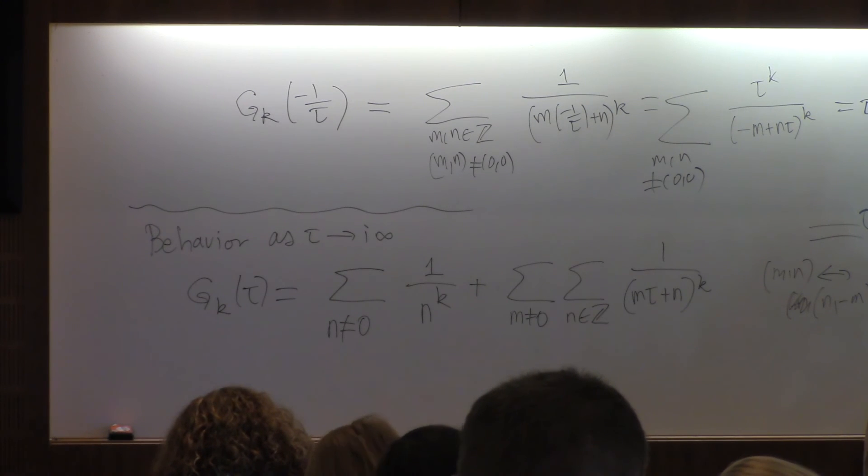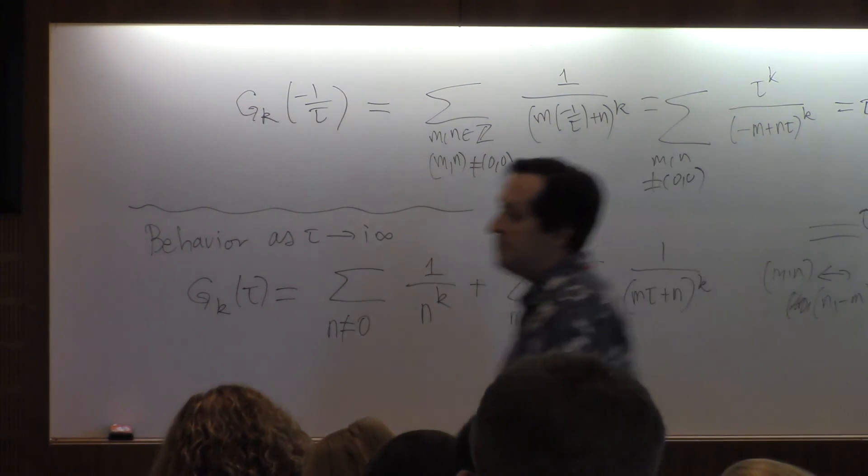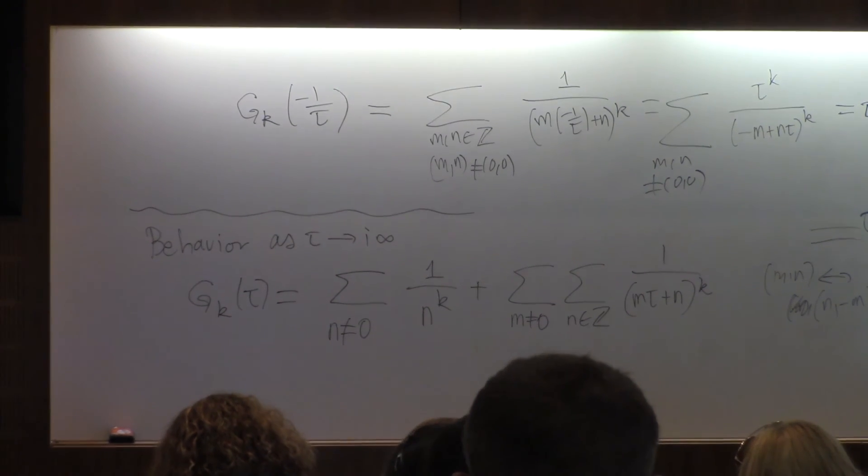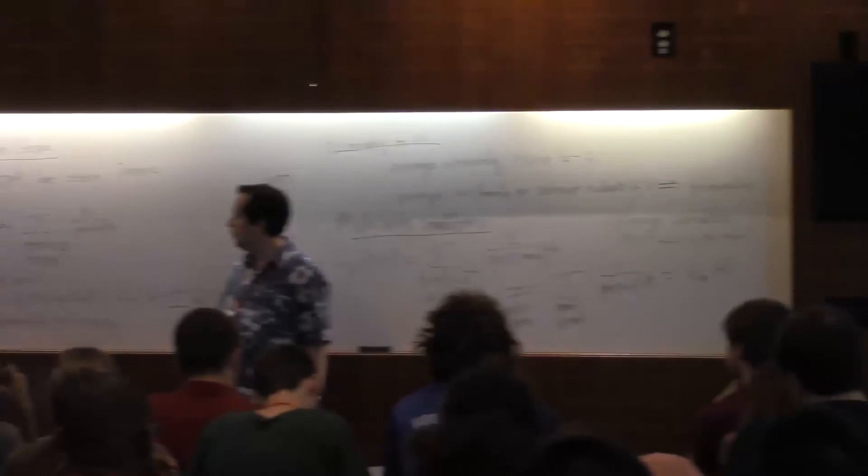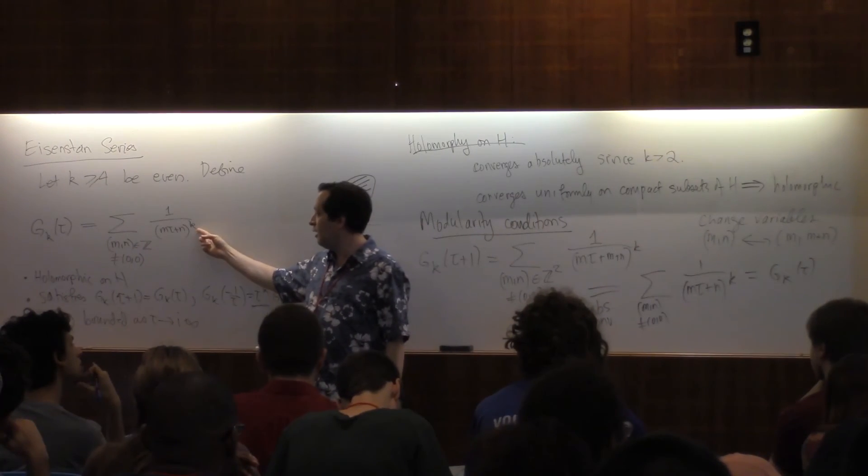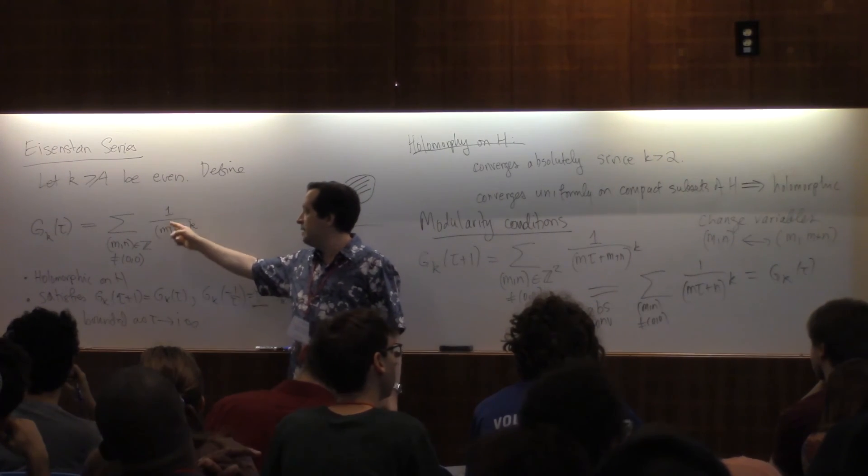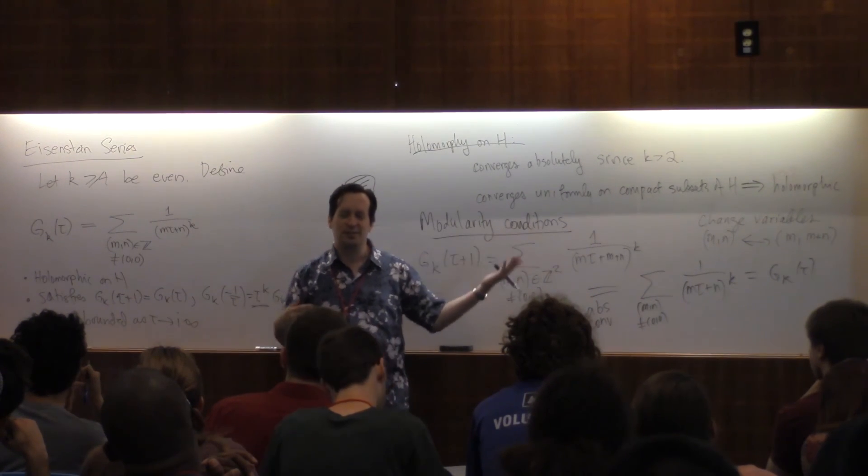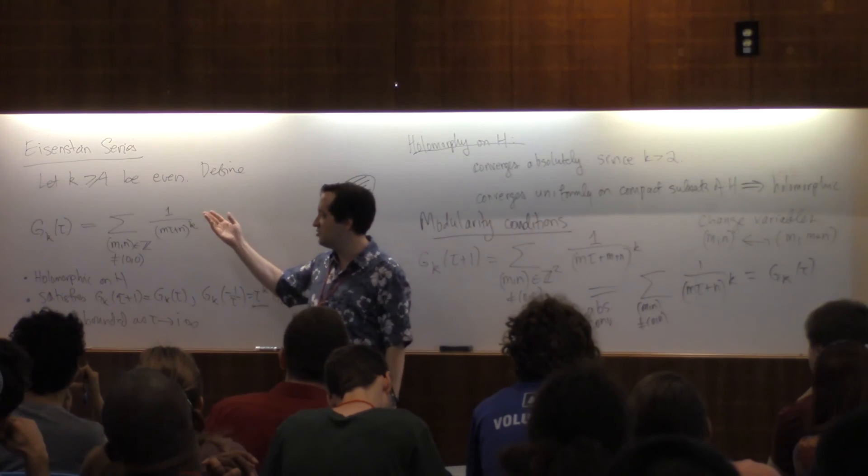Up to this point, I could have let k be odd. As long as k is bigger than 2, even if k were odd, this is an example of a modular form. The catch, though, is if k is odd, then the pair n, n and minus n, minus n cancel out. So you just get the 0 function, which is consistent with the fact that the only example of a modular form of odd weight is 0.